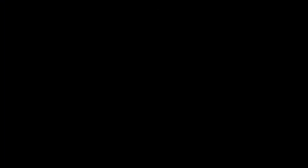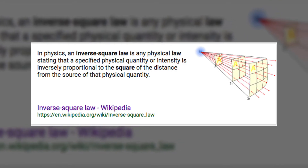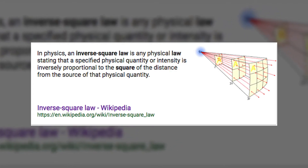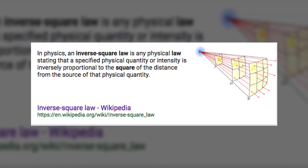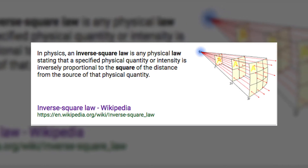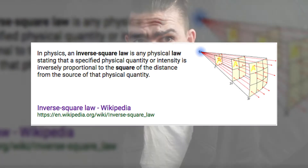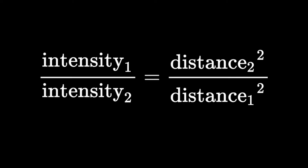So according to Wikipedia, and I quote: the inverse square law is any physical law stating that a specified physical quantity or intensity is inversely proportional to the square of the distance from the source of that physical quantity. What the hell did I just read? And it is represented by this crazy equation, or this other one.